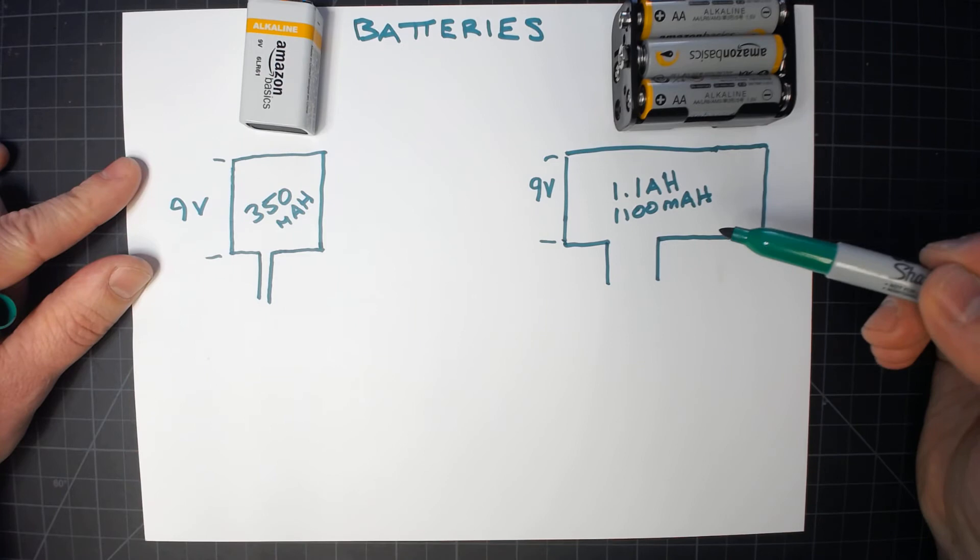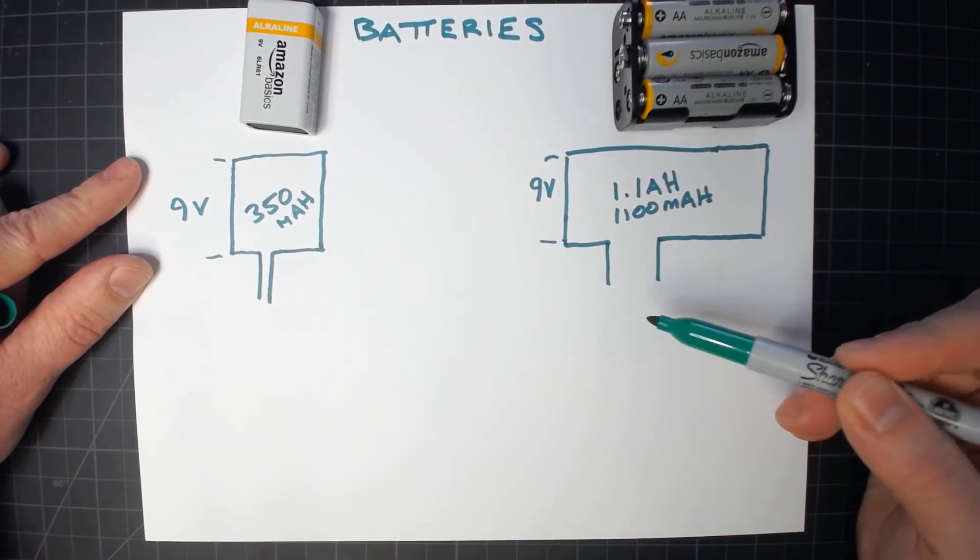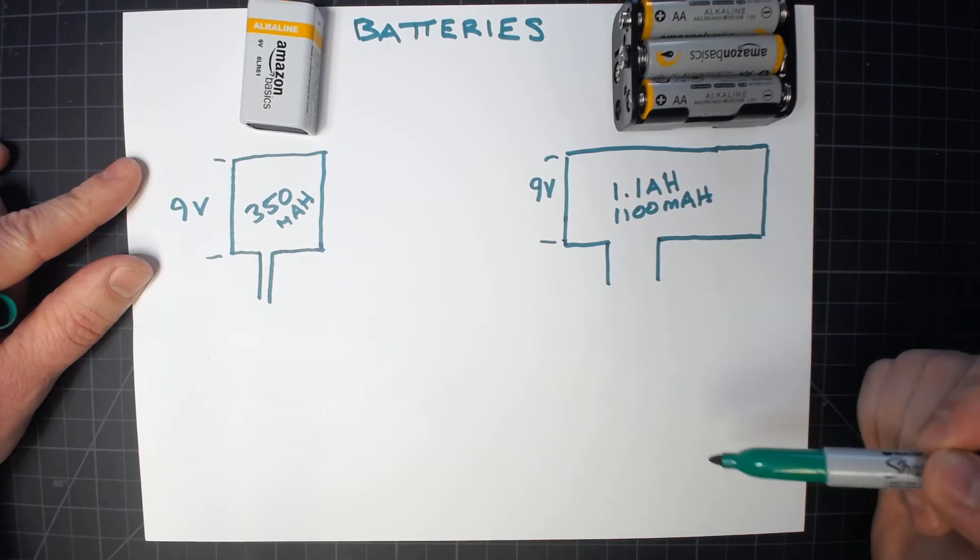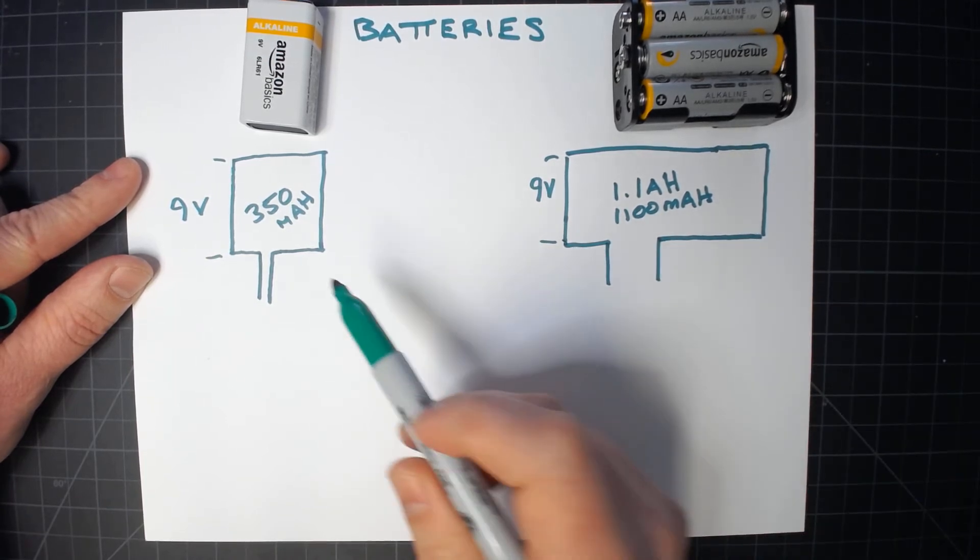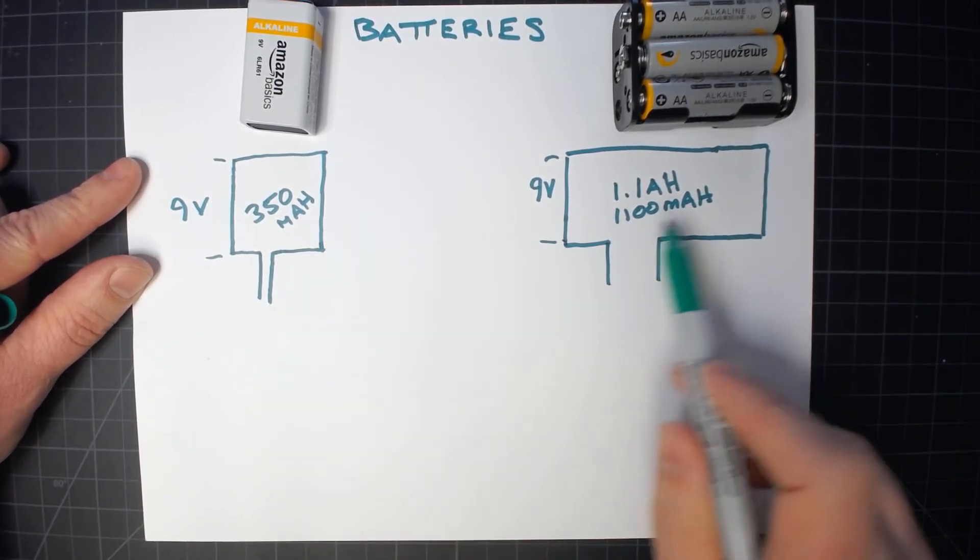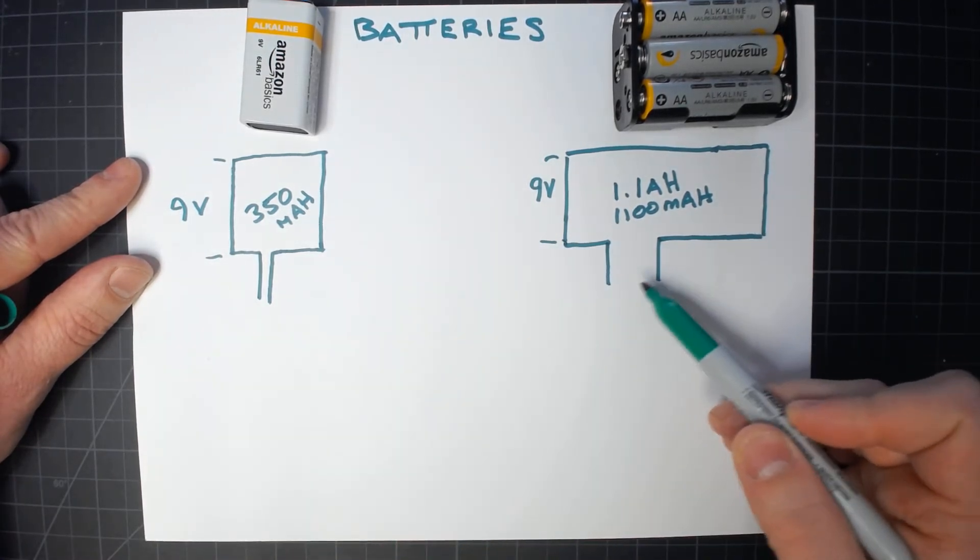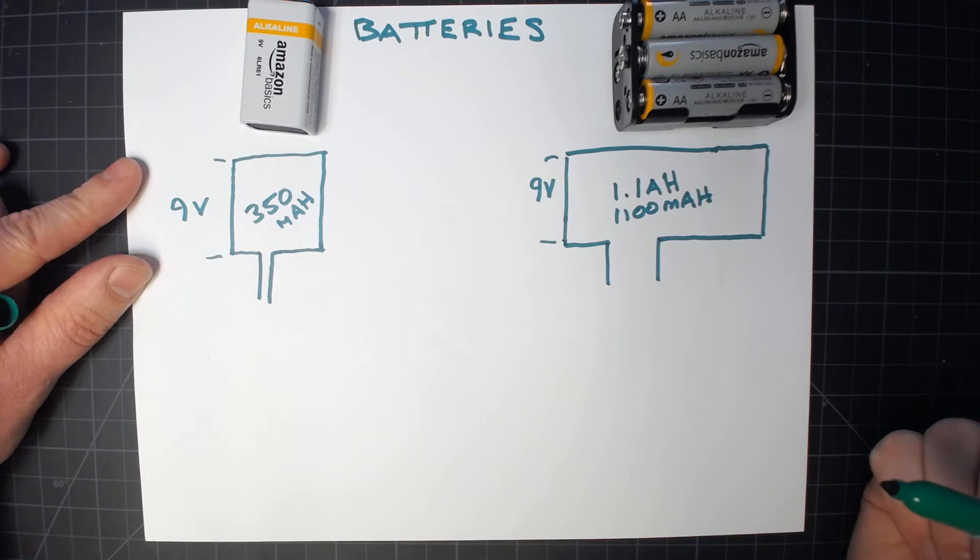This is the biggest thing you need to worry about. Is this able to supply enough current for enough time for me to power what I need to power? Because if everything was equal, this would last three times longer than this. But you also have the ability to deliver more current. This is what matters.